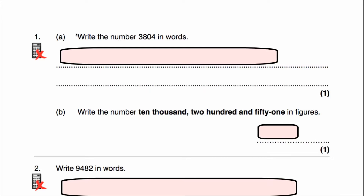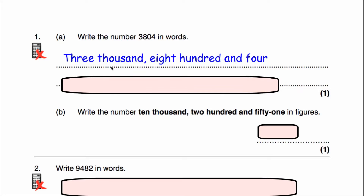Question 1A says write the number 3804 in words. So we've got a 4 in the units or ones column, 0 in the tens, an 8 in the hundreds and 3 in the thousands. So it's 3,804 and we write it as we say it: three thousand, eight hundred and four.